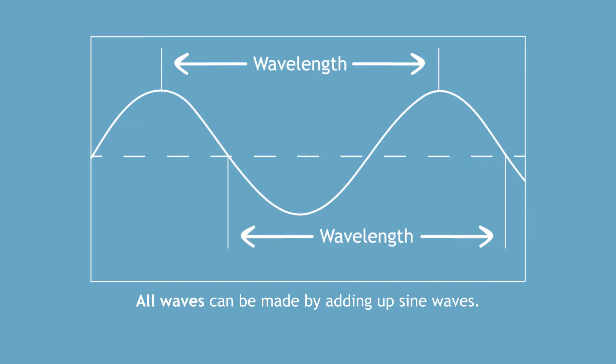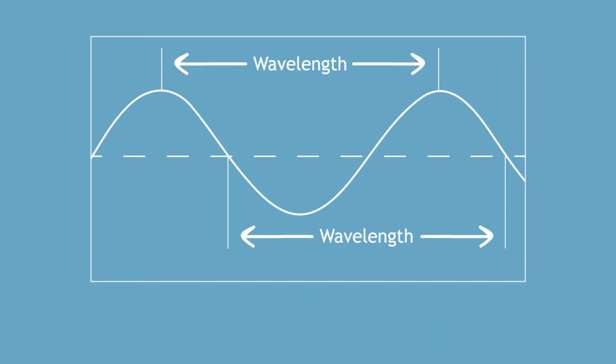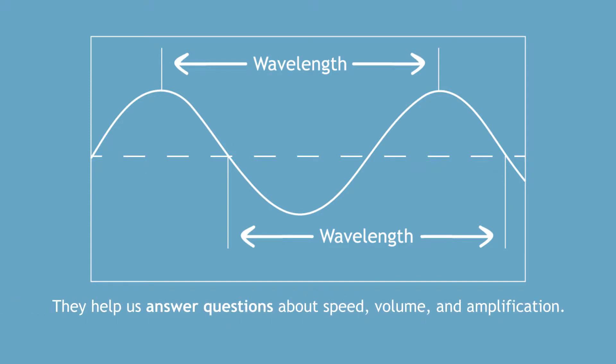All waves can be made by adding up sine waves. Sine waves have a repeating pattern known as a wavelength. These wavelengths can be found by measuring the distance between one peak of a sine wave and the next peak. Sine waves can help us answer questions about speed, volume, and amplitude.